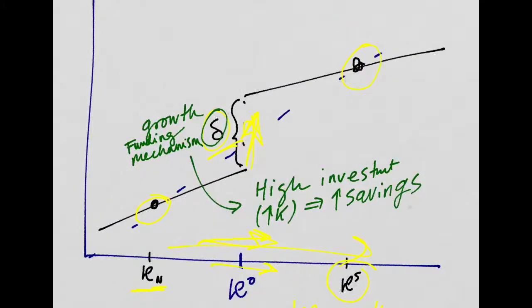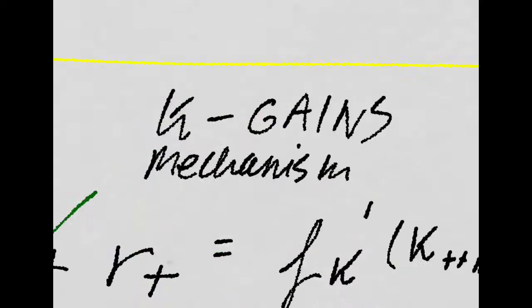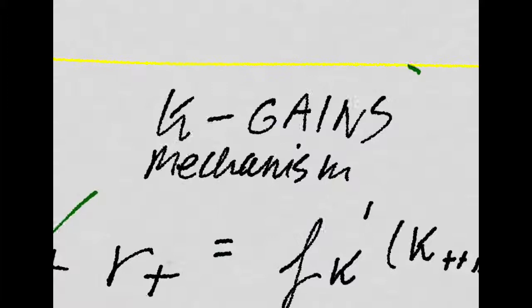But now, they need a way for the economy to be able to get from this point, past this point, and for the growth funding mechanism to kick in. So, the way they're going to model this transition to beyond this point is with what they call the capital gains mechanism.